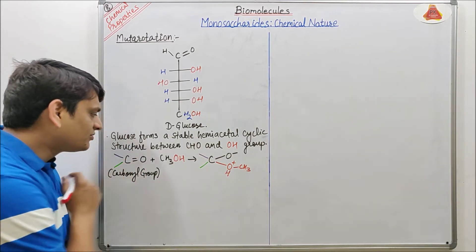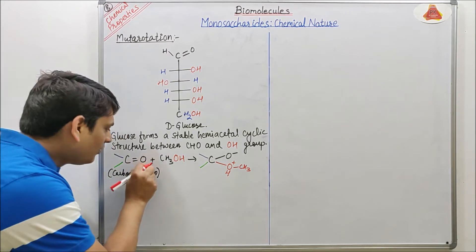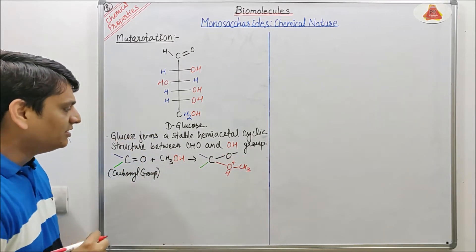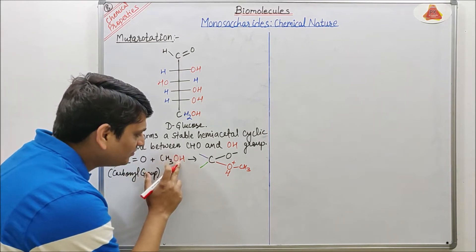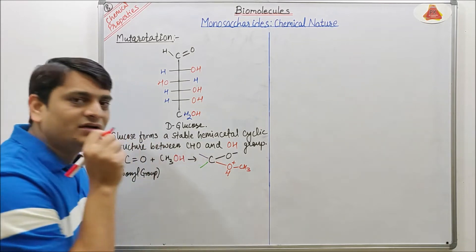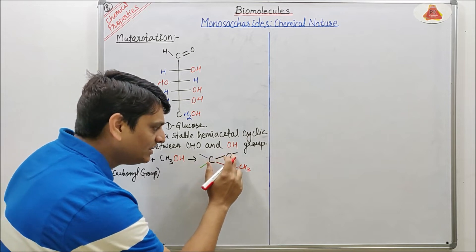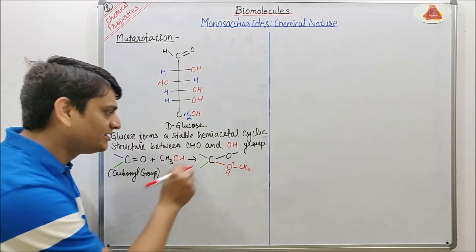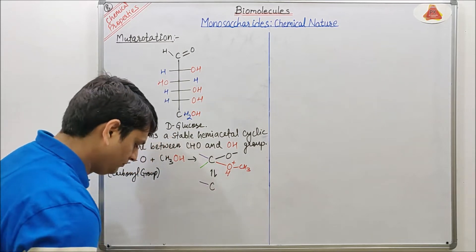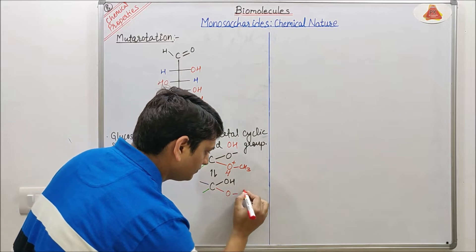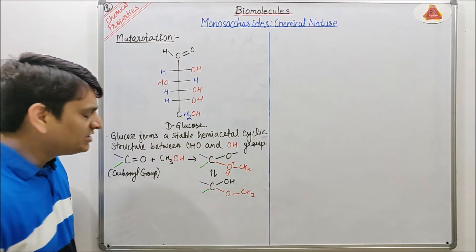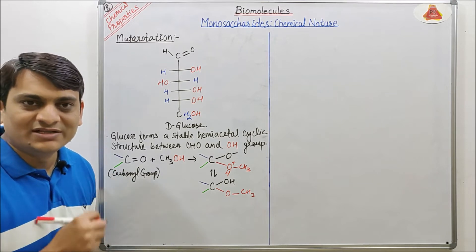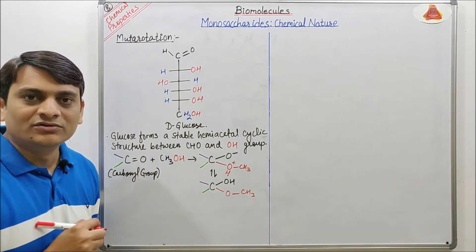In this reaction the carbonyl group is the electrophile and the alcoholic group is the nucleophile. The oxygen withdraws electrons from the double bond and becomes negatively charged. Then this carbon reacts with the alcoholic group and forms a bond. When rearrangement takes place, the hydrogen is transferred to the oxygen and the negative and positive charges are neutralized, forming a stable structure. If the carbonyl group comes from an aldehyde it is known as hemiacetal; if from a ketone it is known as hemiketal.